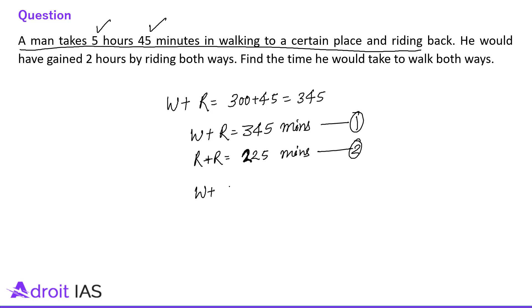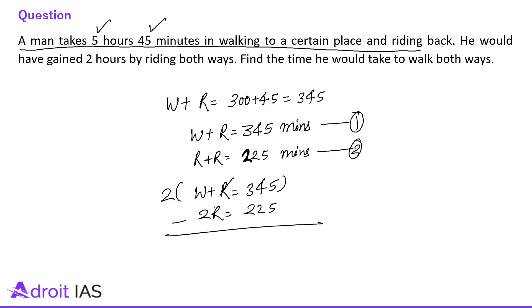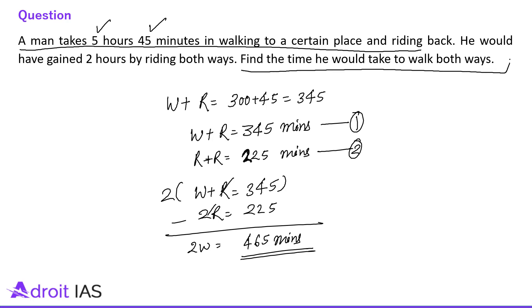He would have gained 2 hours by riding both ways, so riding both ways takes 345 minus 120 = 225 minutes. So equation 2: 2R = 225 minutes. We need to solve these two equations. Multiply equation 1 by 2: 2W plus 2R = 690. Subtract equation 2: 2W = 690 minus 225 = 465 minutes.